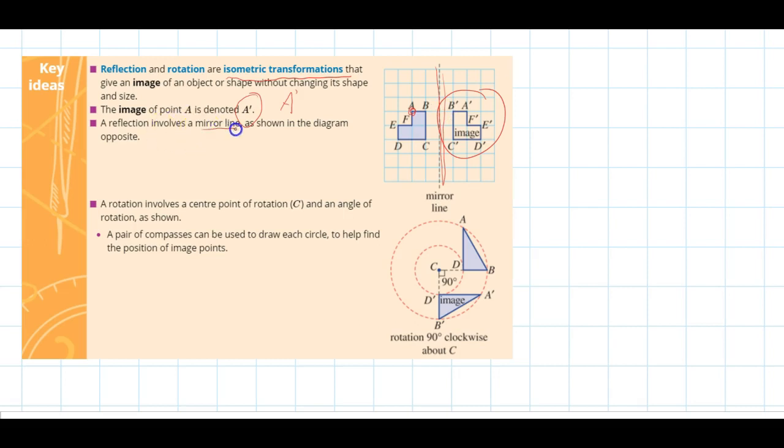Reflection involves a mirror line as shown in the diagram opposite. When we have a mirror line we replicate what that would look like on the opposite side if it was reflected in a mirror. We use those angles or those corners and then we show that with a change in the letter there.